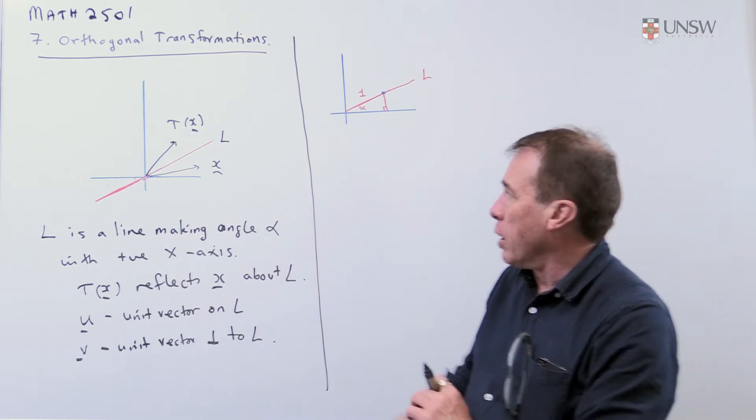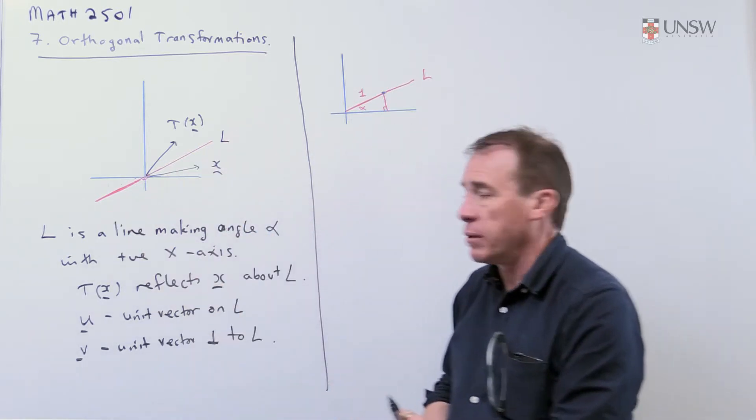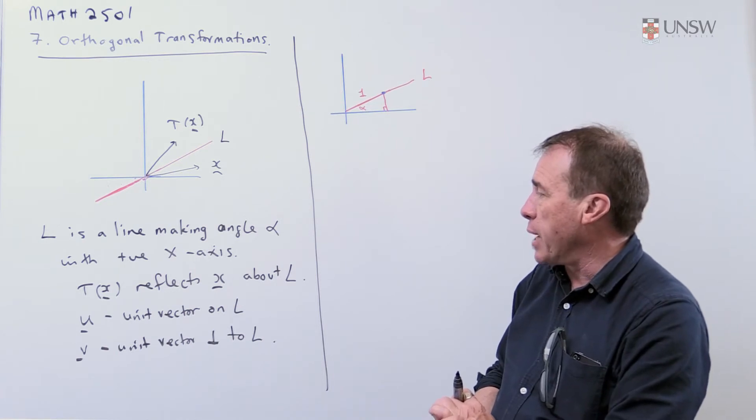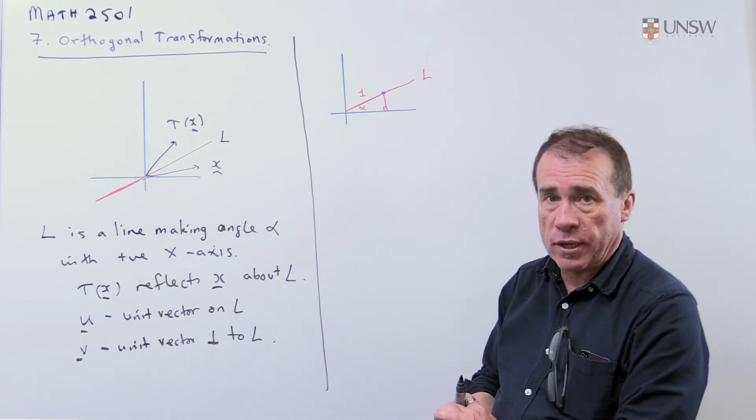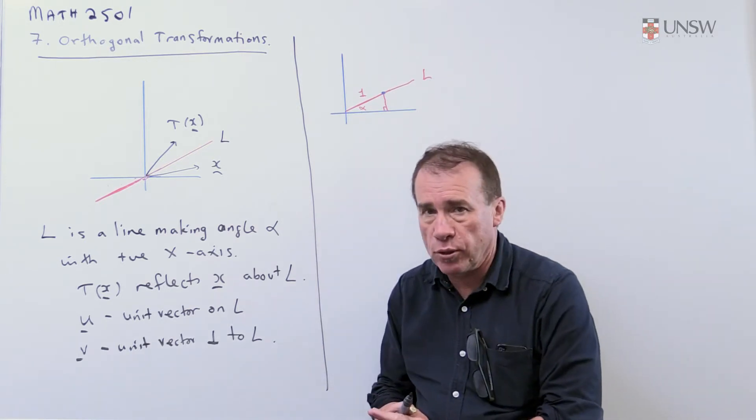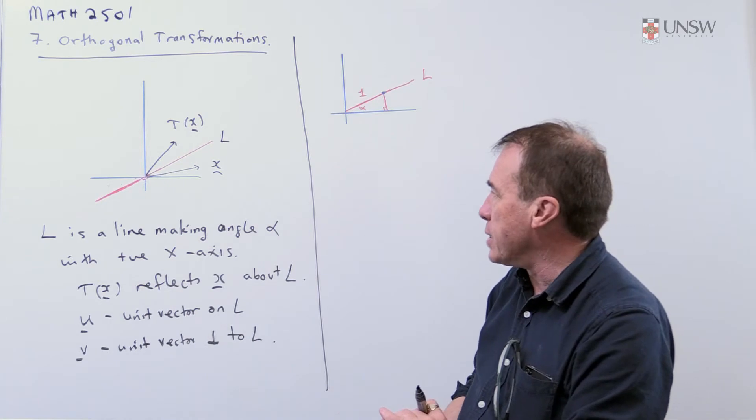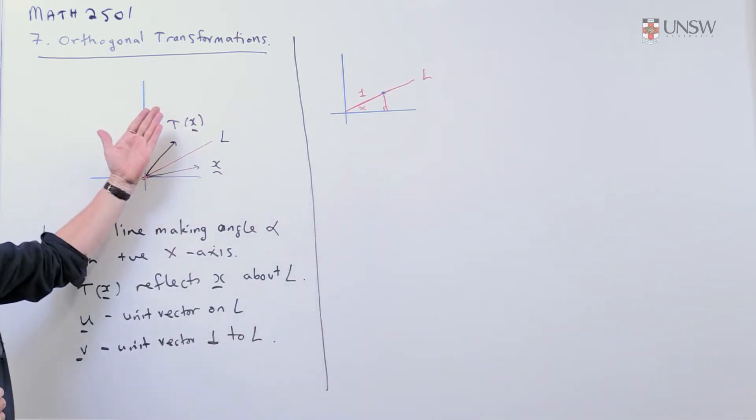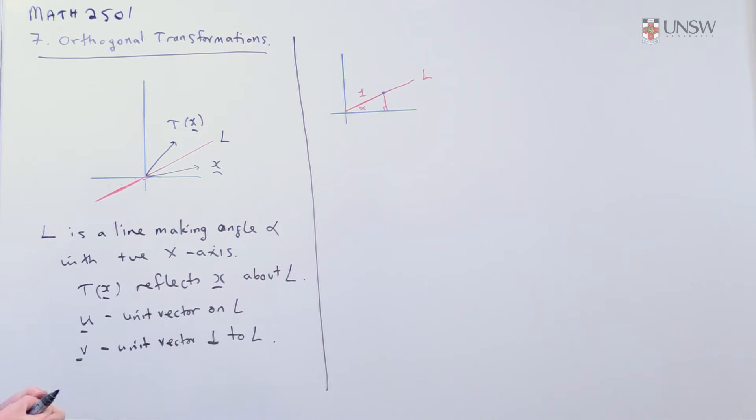So we start off with a line L in the two-dimensional space in R² and it makes an angle alpha with the positive x-axis. We take a linear map T which maps R² to R² and what it does is it takes this vector x and it's going to reflect it about the line and end up at the point T of x. So it's going to be a reflection. I'm going to take u - in the question we're told is a unit vector that lies on L - and v is a unit vector perpendicular to L.